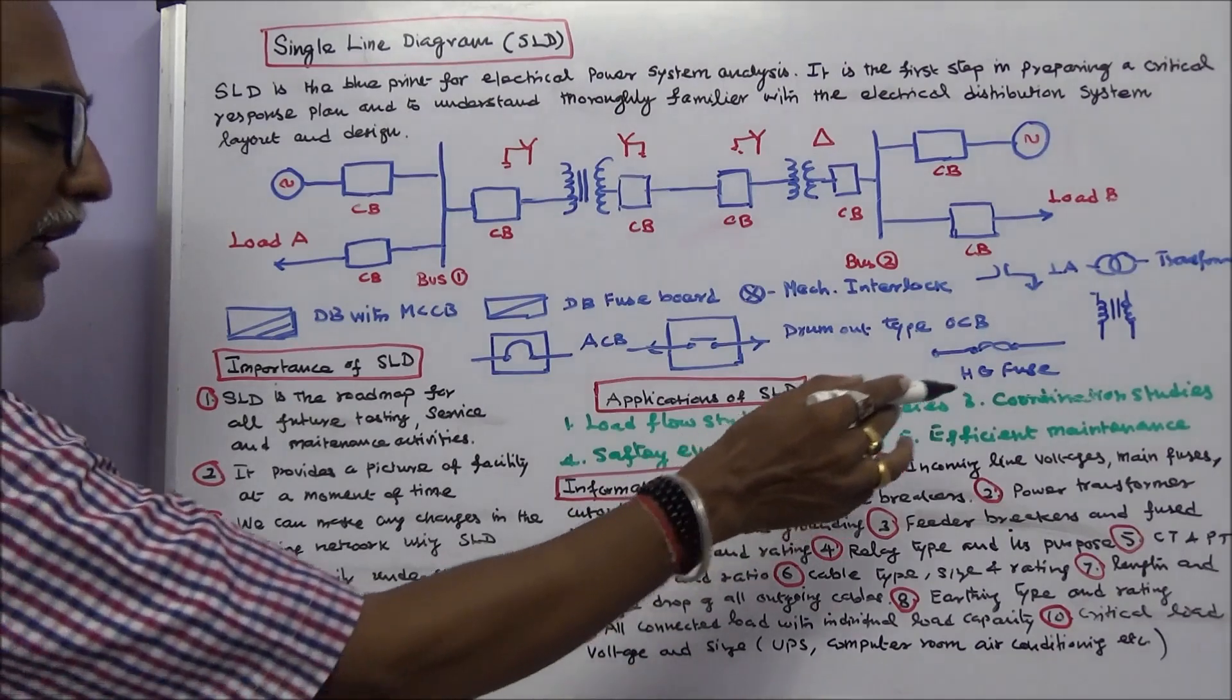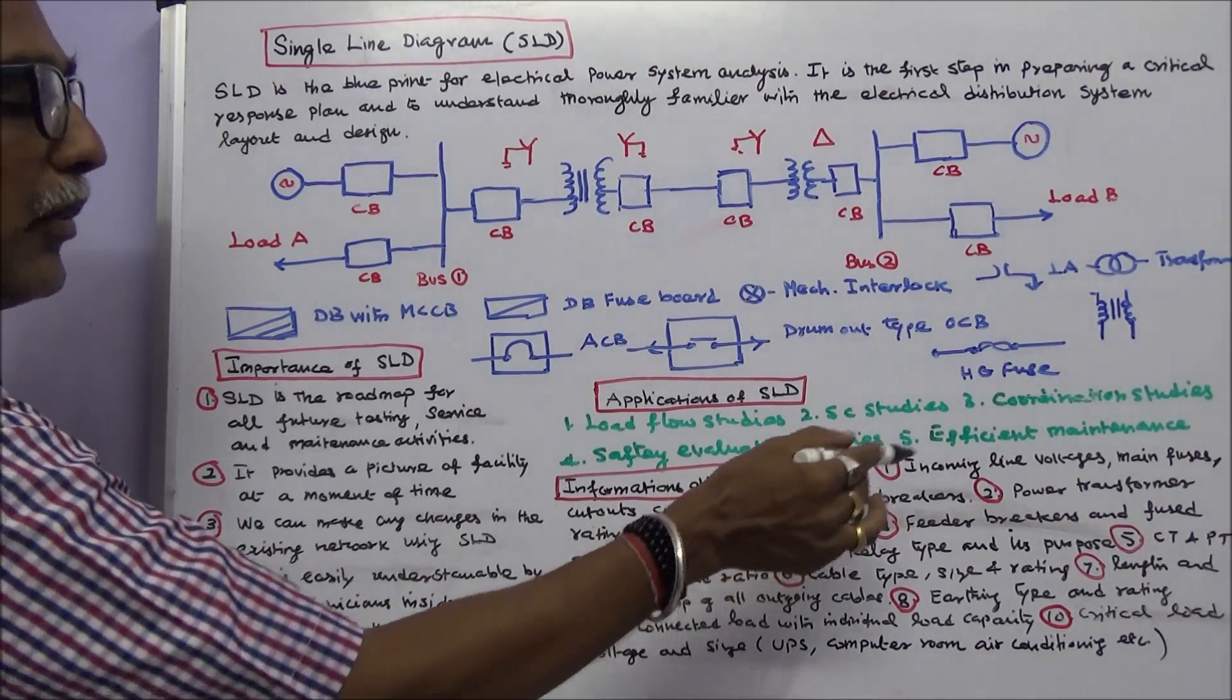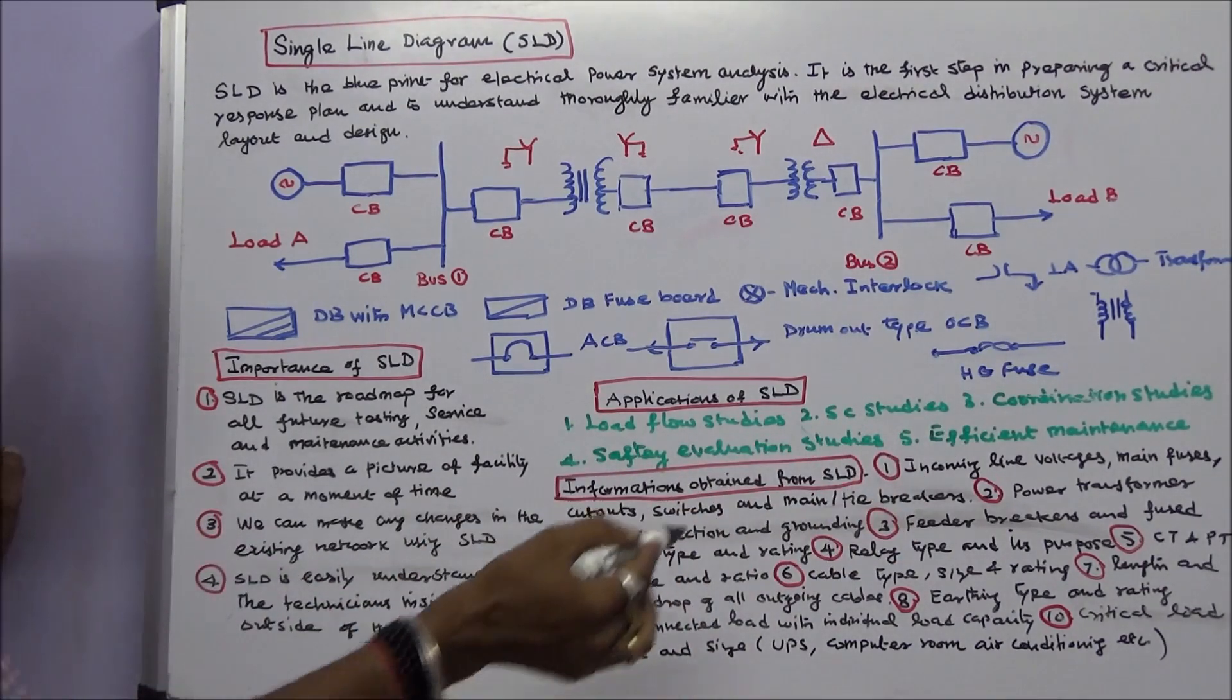Number two, power transformer rating, connection, and grounding. Number three, feeder breakers and fuse to switches type and rating.